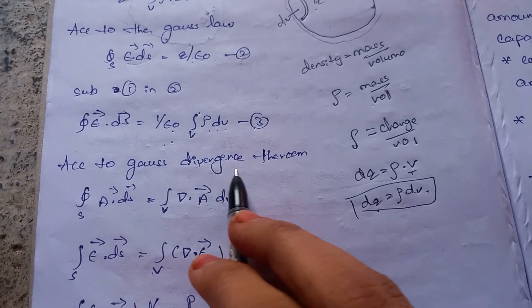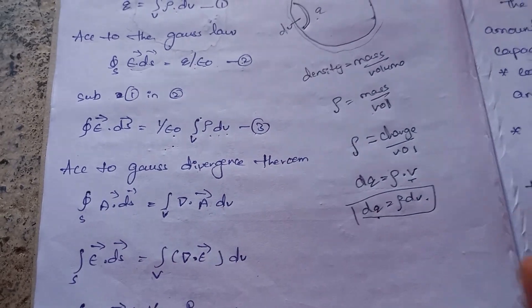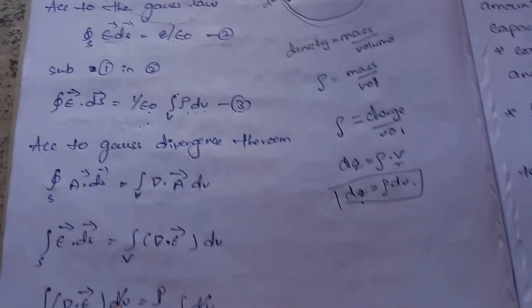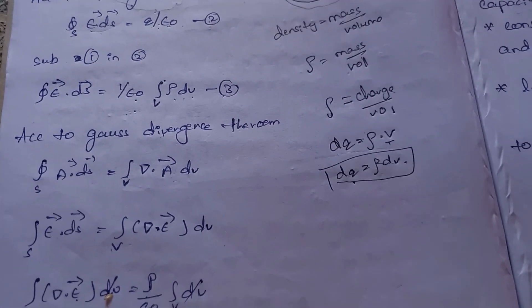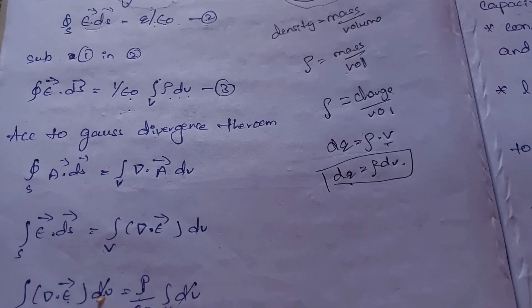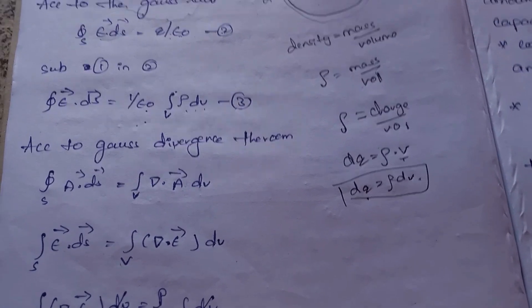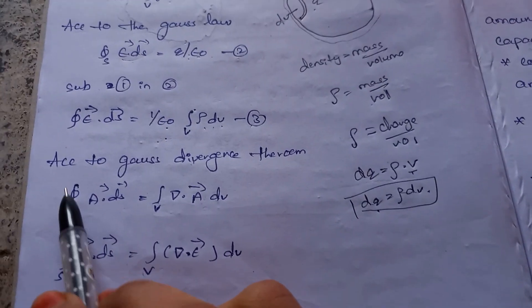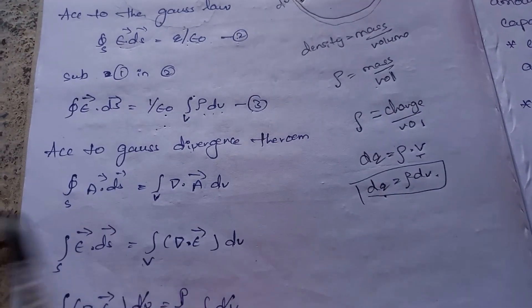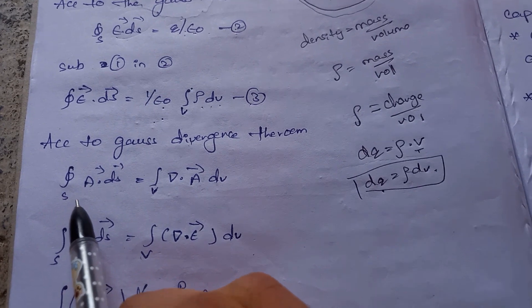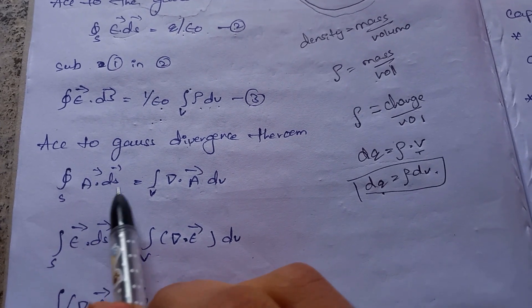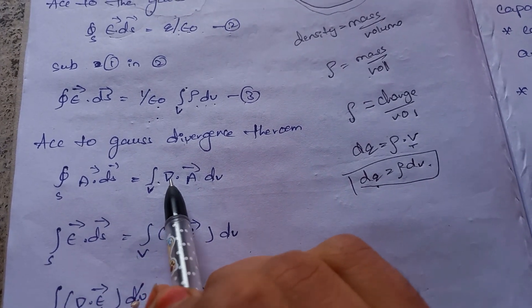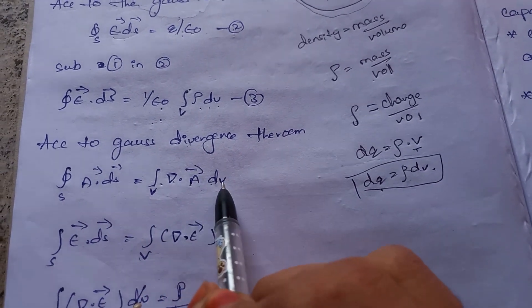According to the divergence theorem, the surface integral of E·ds equals the volume integral of (∇·E) dv. Therefore the surface integral of E·ds equals ∮(∇·E) dv.